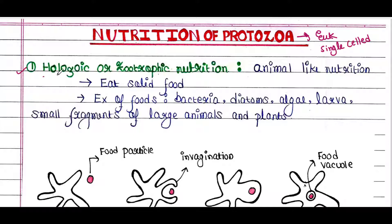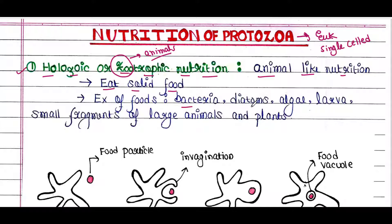The first type is holozoic or zootrophic nutrition. 'Zoo' means animals, so this type of nutrition is animal-like nutrition. In this type of nutrition they eat solid food. The food options include bacteria, diatoms, algae, larvae, and small fragments of large animals and plants — all different types of solid foods.